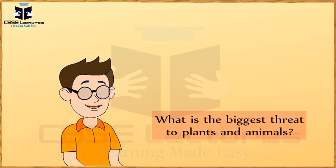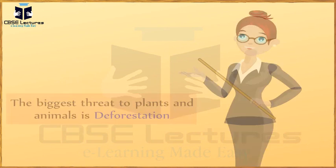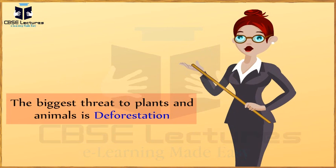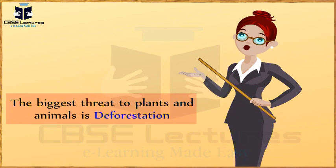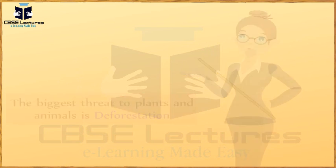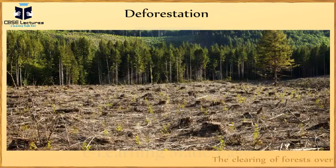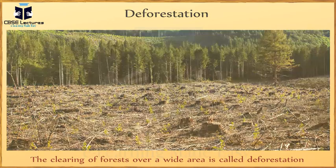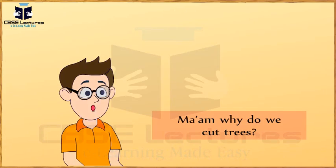Ma'am, what is the biggest threat to plants and animals? The biggest threat to plants and animals is deforestation. The clearing of forests over a wide area is called deforestation.